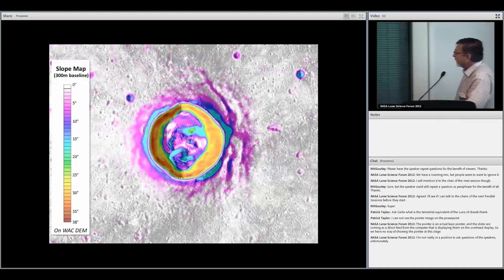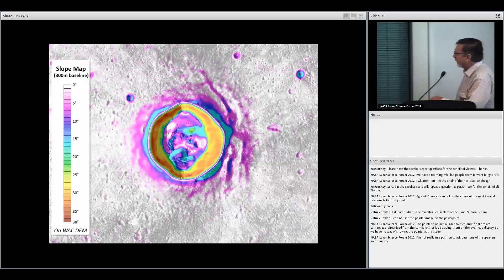Slopes also tell us quite a bit. The north-south wall, inner wall of the crater, is very much wider than it is in the north and the south.